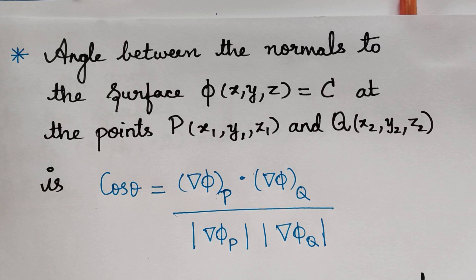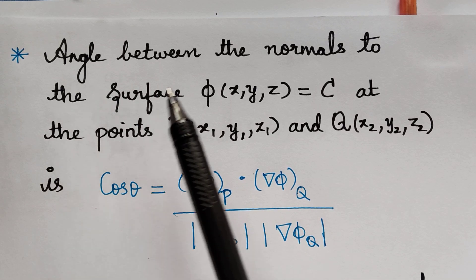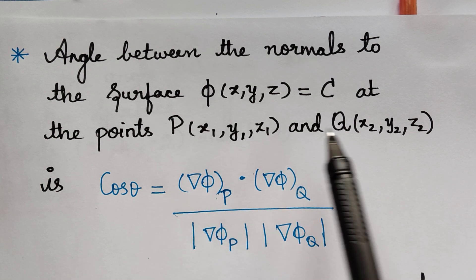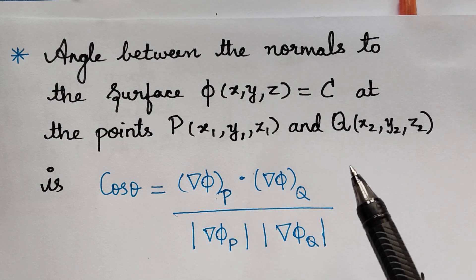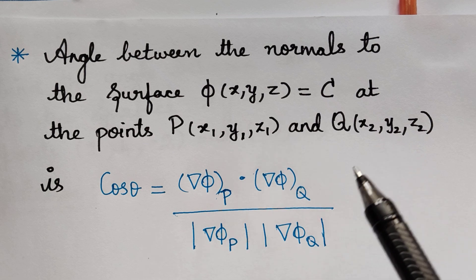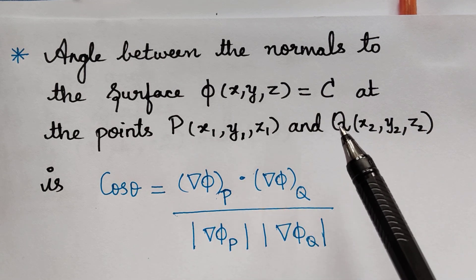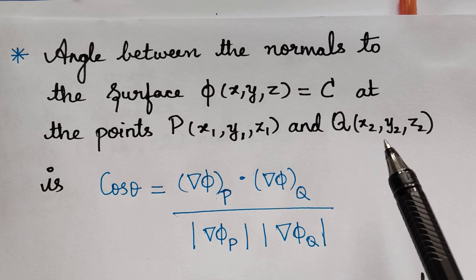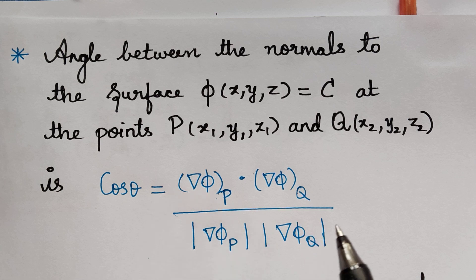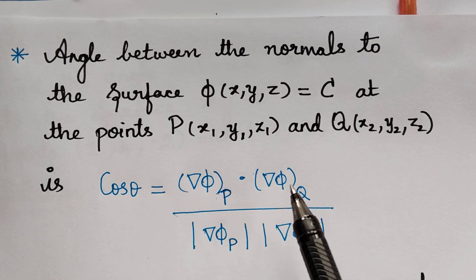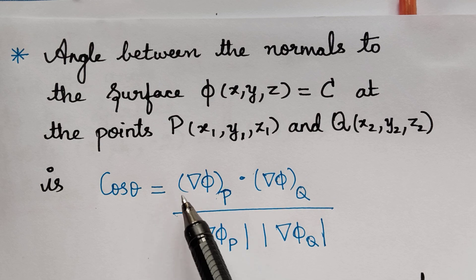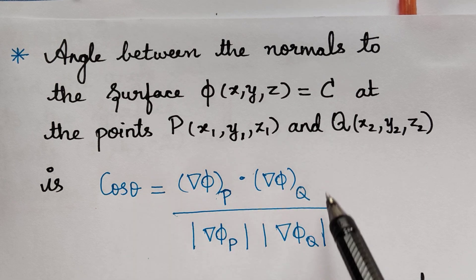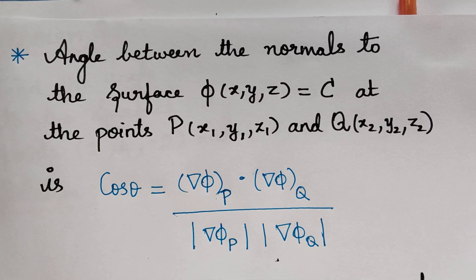Hello students. In this video we are going to learn how to find the angle between the normals to the surface phi at two different points P and Q. Previously we learned how to find the angle between two different surfaces at a common point. Now the question will be the angle between the normals to one particular surface at two different points. The formula remains the same, except the surface is a single surface.